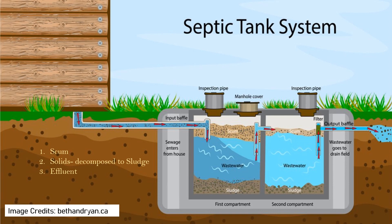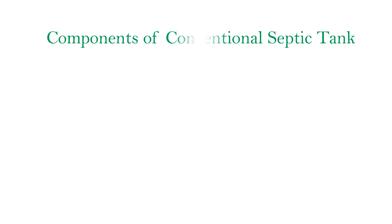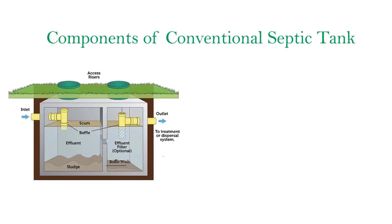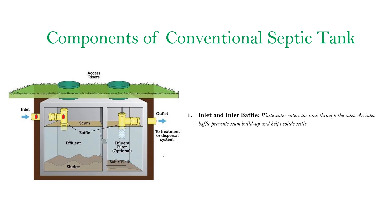Let's discuss the main key components of a septic tank in detail. First, the inlet pipe and inlet baffle: wastewater enters the tank through the inlet. An inlet baffle prevents scum buildup and helps solids settle.